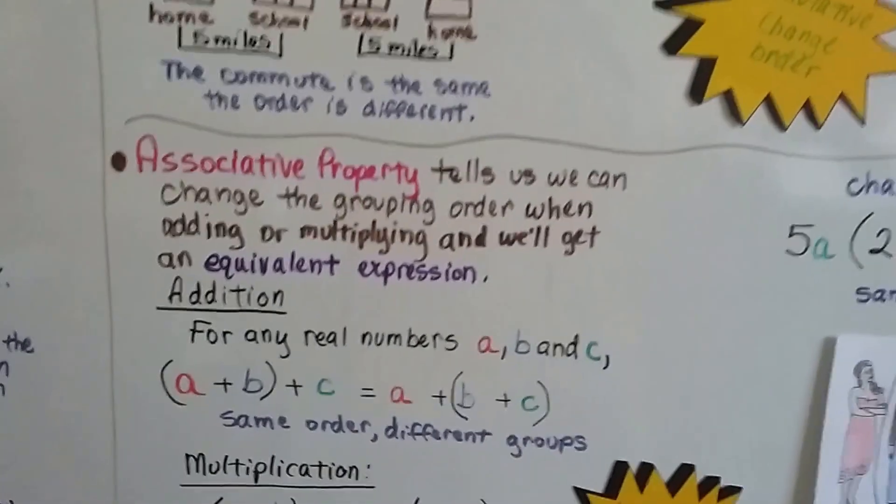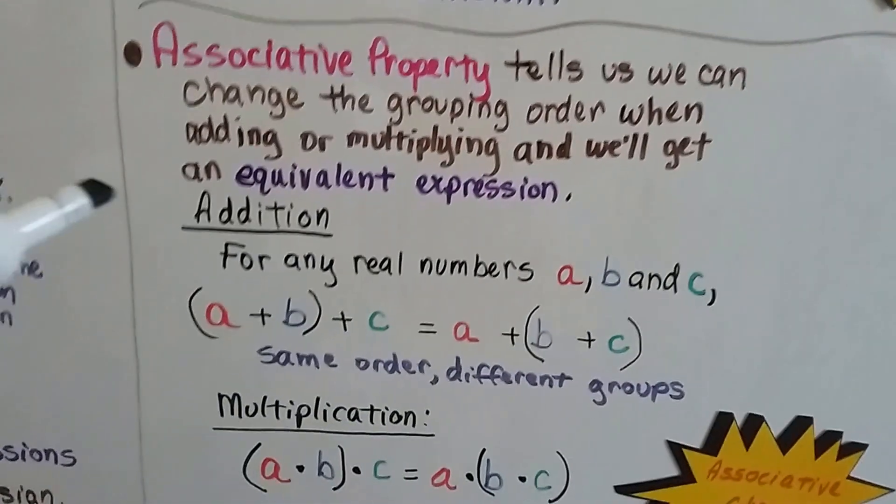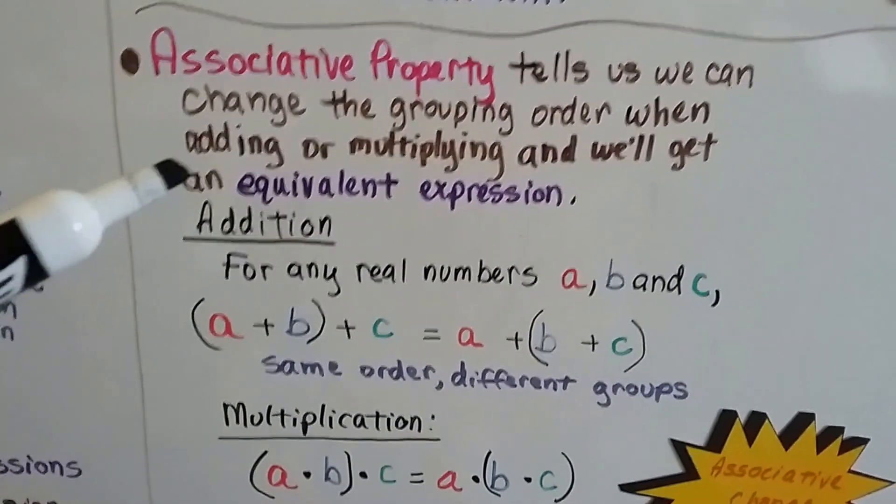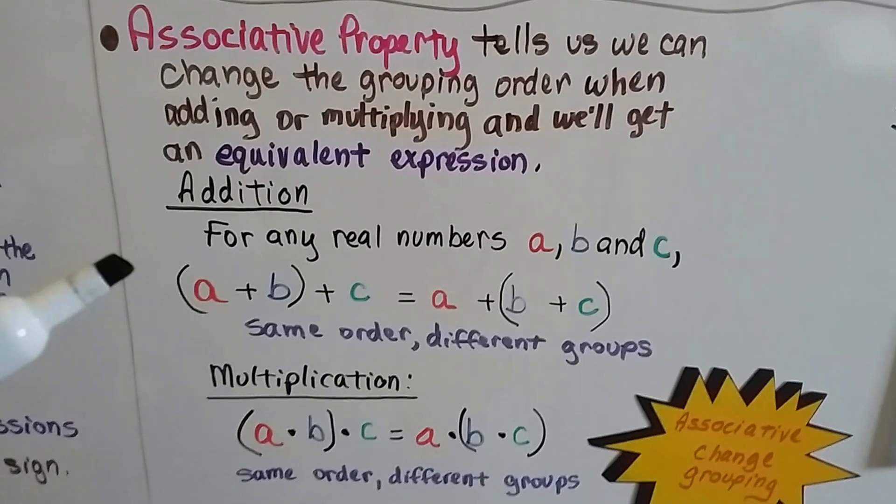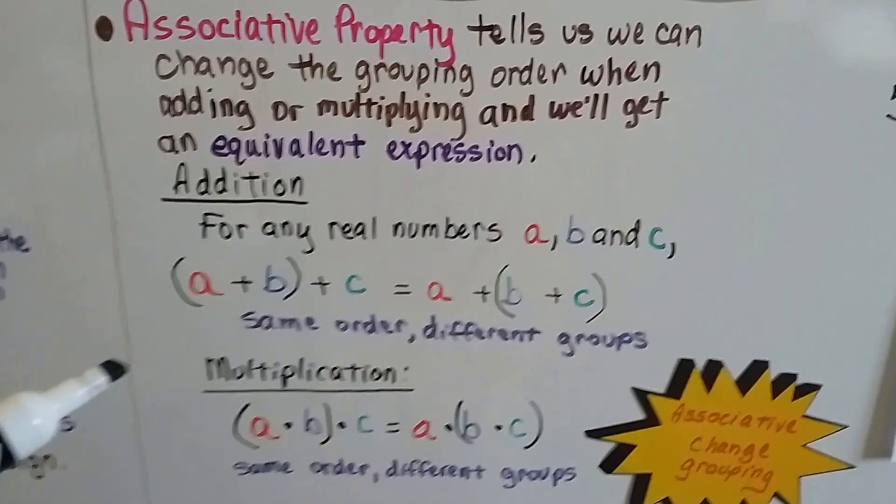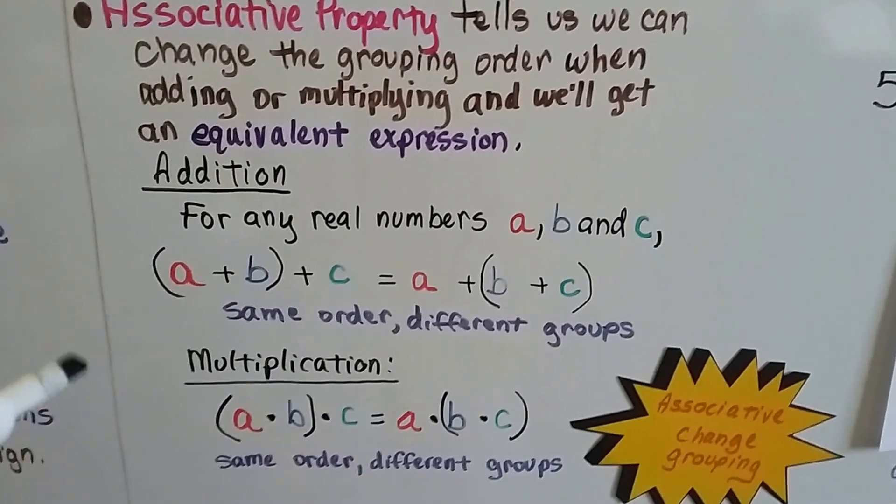Now, in the associative property, I want you to think of associates and associating and who you associate with. Who you hang out with. The associative property tells us that we can change the grouping order when adding or multiplying and we get an equivalent expression.